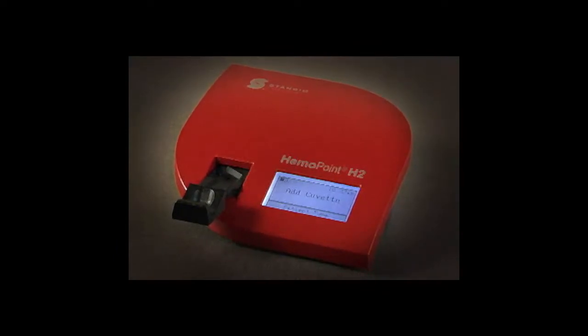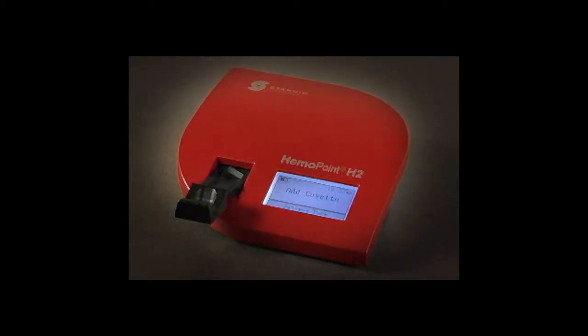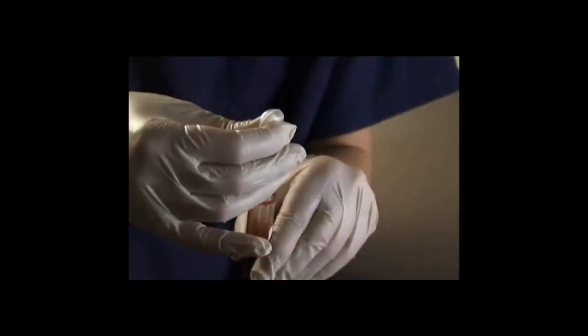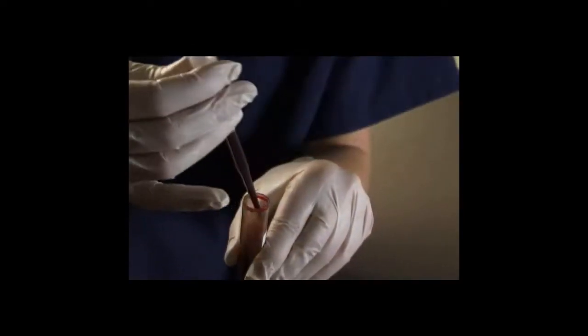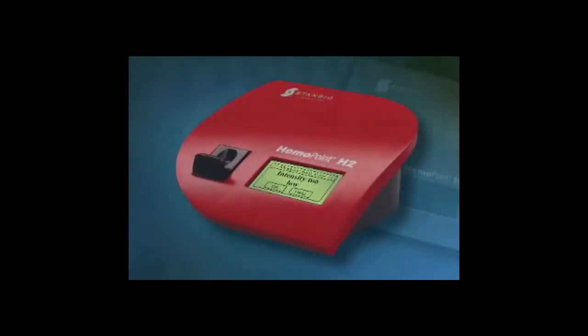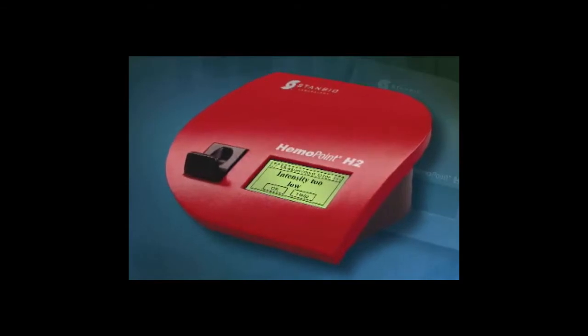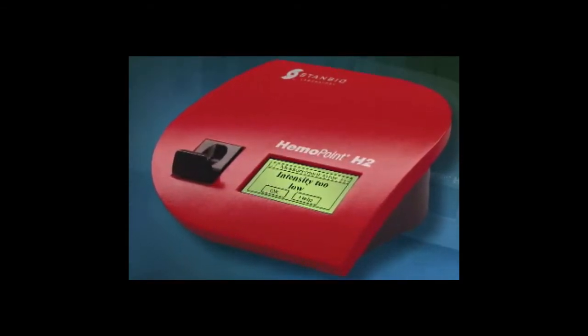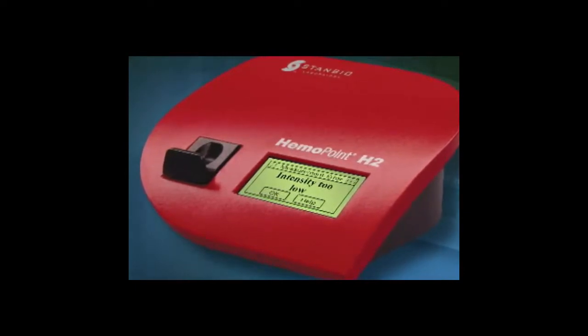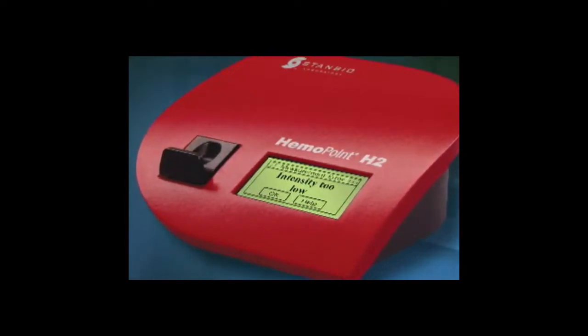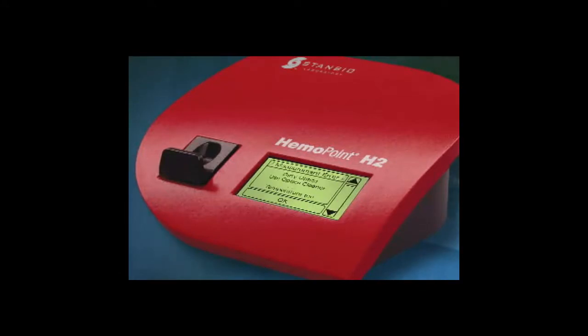The optical unit is situated inside the photometer and has no direct contact with the cuvette. Therefore, no routine cleaning is needed. However, if blood samples do come into contact with the optical unit, cleaning can become necessary. If the measured maximum light intensity of the photometric light source no longer achieves the appropriate level required for testing, the Hemopoint H2 photometer will display one of the following error messages: Intensity Too Low or Dirty Optics Use Optics Cleaner. The optical unit should be cleaned when either of the above messages are displayed.